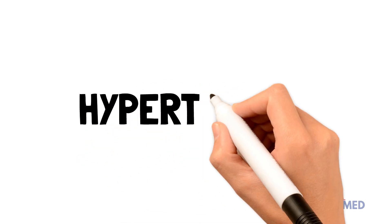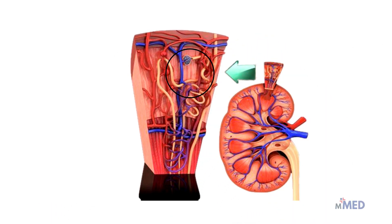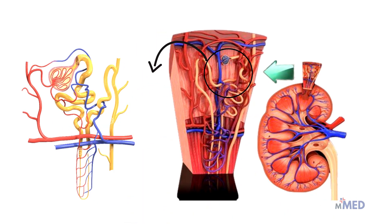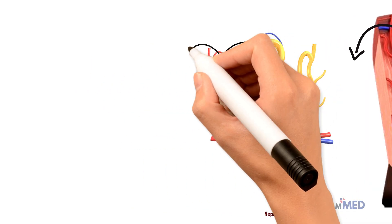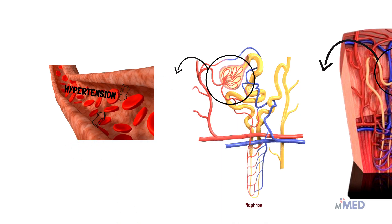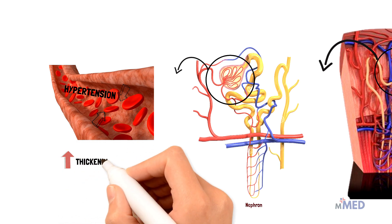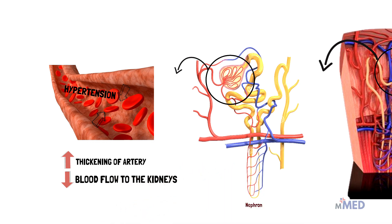Let's look at how hypertension, or high blood pressure, causes chronic kidney failure. The functional unit of the kidney that filters our blood to form urine is the nephron. When blood pressure is normal, blood gets filtered normally through the nephron. During hypertension, there is thickening of blood vessels entering the kidney, which causes narrowing of the lumen. Because of this narrowing, there is less blood flow to the kidneys, leading to a decrease in filtration and thus a decrease in GFR, or the glomerular filtration rate.